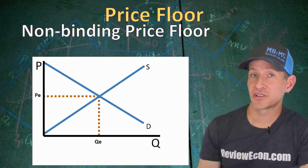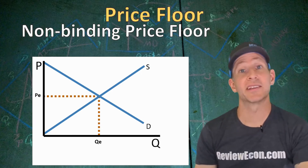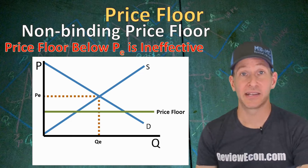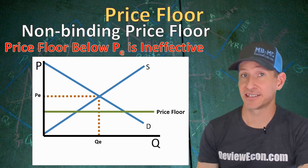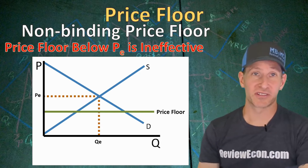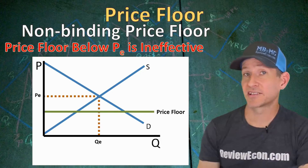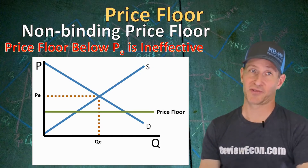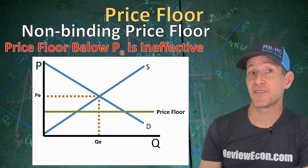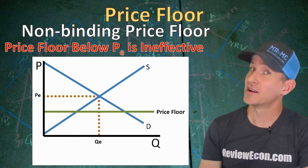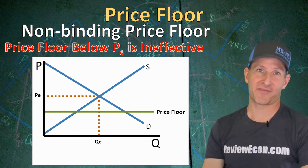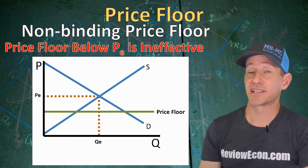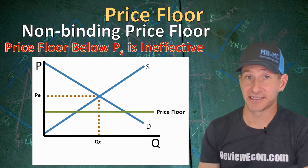You could see questions on your exam with a price floor that is below equilibrium — that is what we call a non-binding or ineffective price floor. Since the market will seek the equilibrium price, the quantity supplied will still equal the quantity demanded, and we will get the equilibrium quantity as a result. If minimum wage were set at 5 cents an hour, not many workers would be willing to work at that wage, and the market wage would seek the equilibrium wage as a result. The price floor would be non-binding or ineffective.